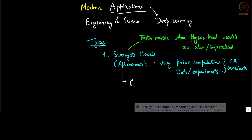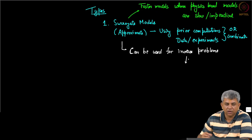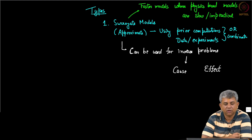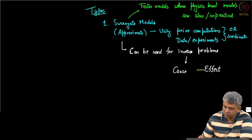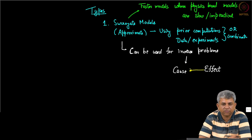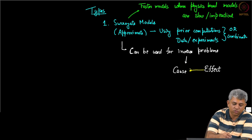Using these you can make an approximate model. The surrogate model in turn can be used for inverse problems. An inverse problem is one where normally you go from cause to effect, but an inverse problem goes from effect to cause. I am just introducing some terms here — in case you are already using some of these in engineering or science, this will be a bit more helpful to you.